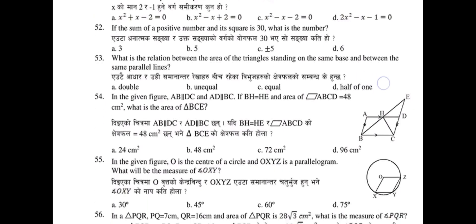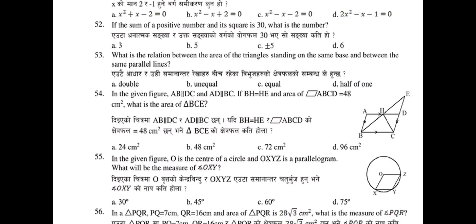Question 53: What is the relation between the areas of triangles standing on the same base and between the same parallel lines? Options: double, equal, half of one another. The answer for question 53 is selected from ABCD.